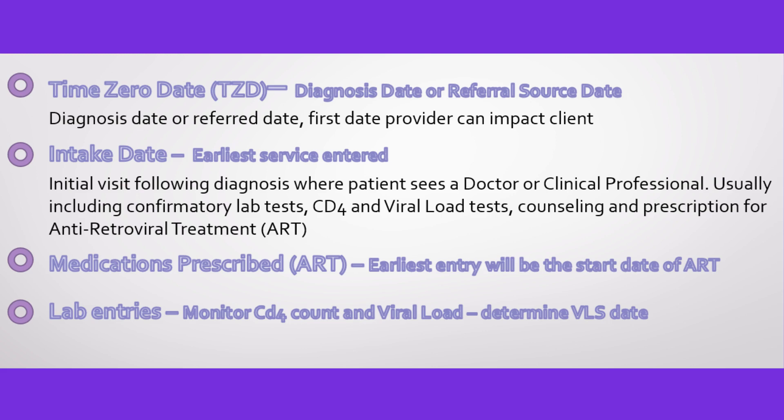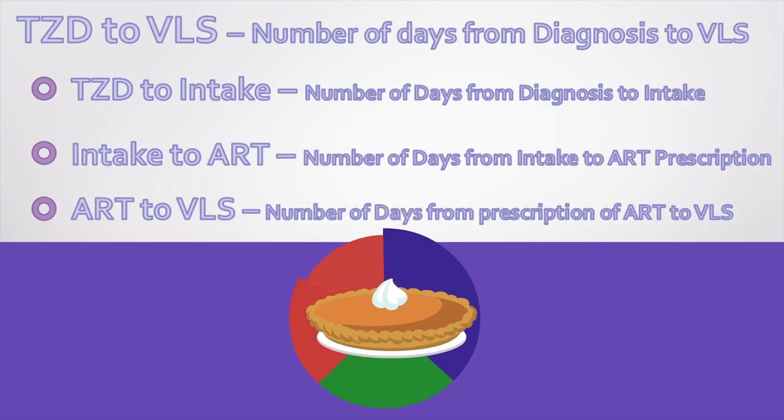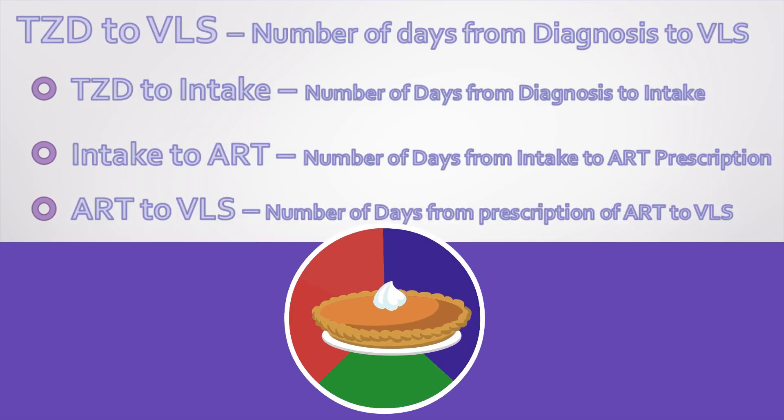The medications prescribed means the start date of ART, and lab entries refers to the monitoring of CD4 count and viral load to determine the viral suppression date. Think of these three data points as a pie — each piece plays a critical role from time zero date to viral suppression.